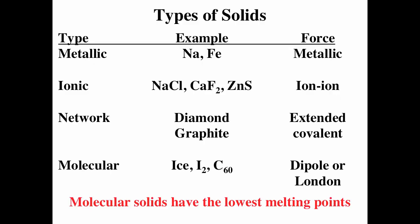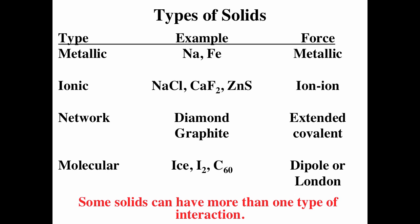There are four main types of solids: metallic, ionic, network, and molecular. We can understand the physical properties if we understand the intermolecular forces holding them together, as each type has different types of intermolecular forces. Some solids can have more than one type of interaction. If we understand the interactions holding the solid together, we can often understand the macroscopic properties.